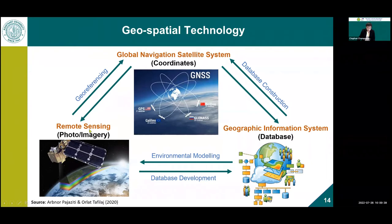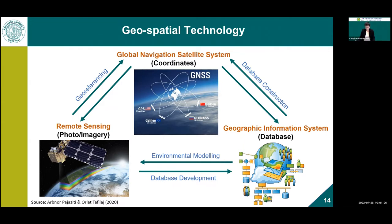Remote sensing refers to obtaining information without touching the object — just as a TV remote changes channels without touching the TV. In satellite remote sensing, you want to know phenomena on the Earth's surface, so you use a satellite or aerial platform to take images without touching the ground. Satellite remote sensing also needs GNSS to assign coordinates to images — without coordinates, a satellite photo is just a JPEG with no geographic meaning.